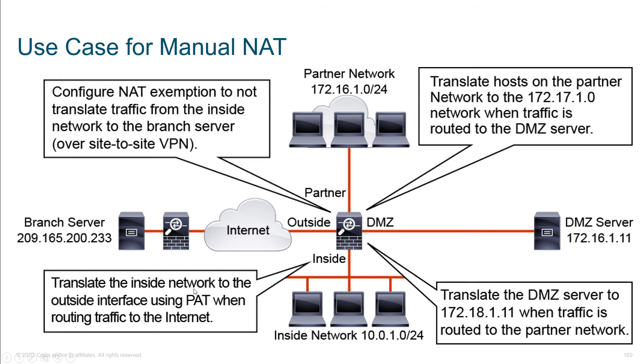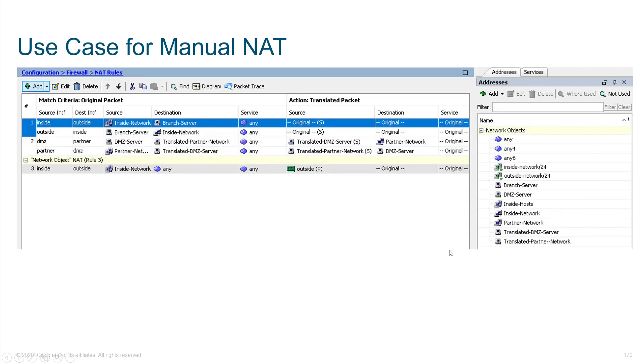Over here we see translating the inside network to the outside interface using PAT when routing traffic to the internet — just using that one public IP shared among all internal users.